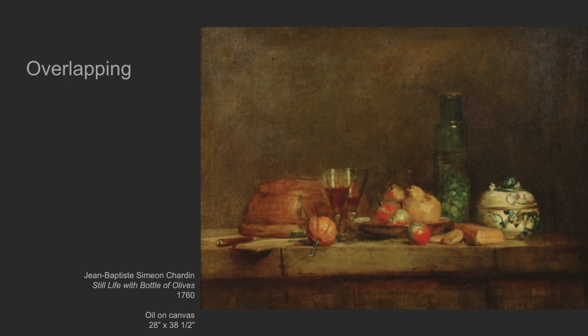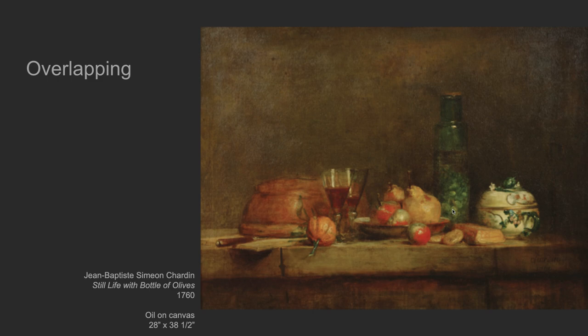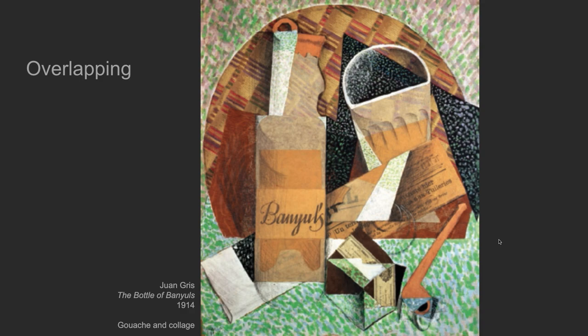A question for you: what object in this image is closest to you? I would say this pumpkin-looking thing — this little tiny pumpkin — is closest to us because it's in front of all of these things. That apple might come in a close second. The farthest away thing is this glass container.